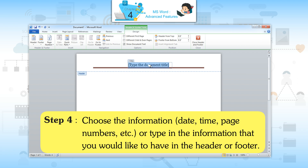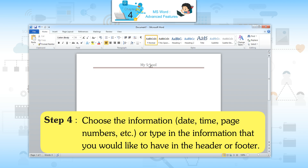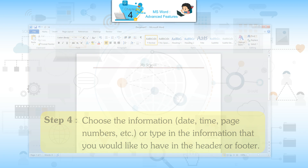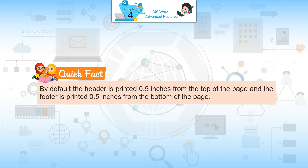Step 4 — choose the information: date, time, page number, etc., or type in the information that you would like to have in the header or footer. Quick Fact: by default, the header is printed 0.5 inches from the top of the page and the footer is printed 0.5 inches from the bottom of the page.